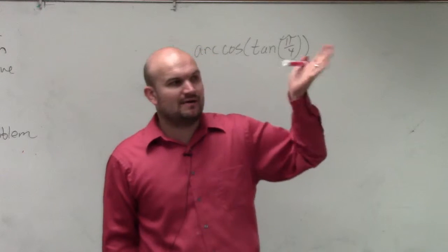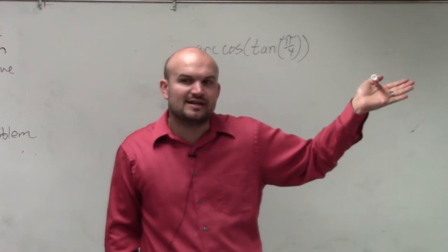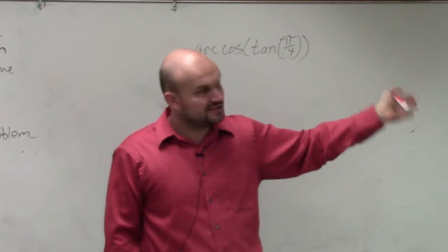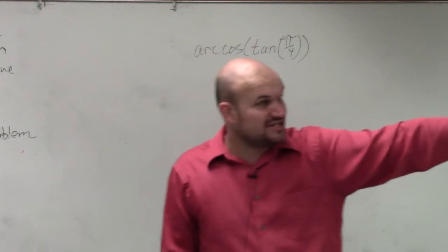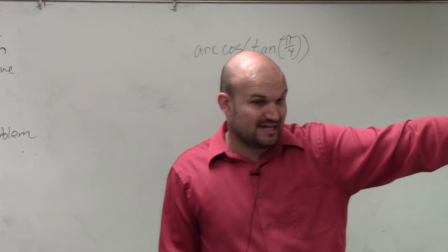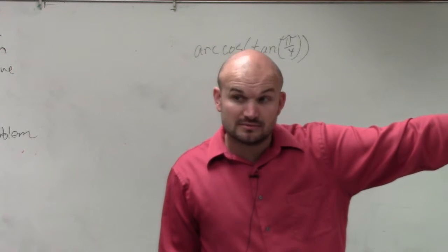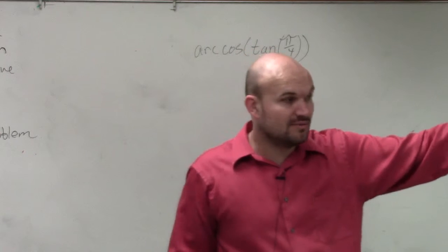So again, ladies and gentlemen, you could look at π over 4 as the same thing as a 45-45-90 triangle and find the tangent. Or you could look at π over 4, which represents 45 degrees, tangent is the y over x. What do we say the tangent of π over 4 is? 1. Yeah, it's 1.